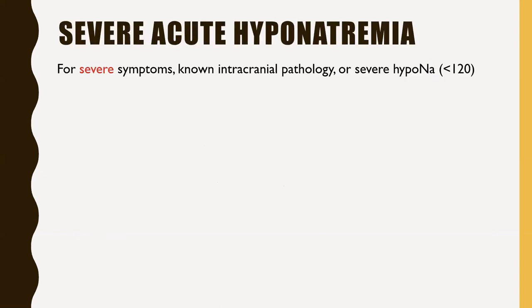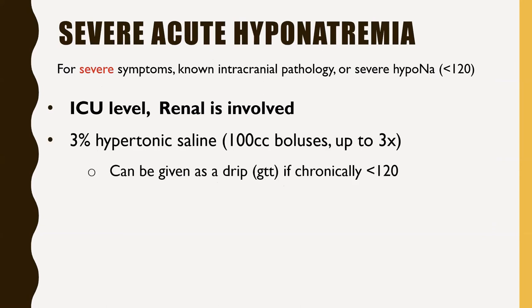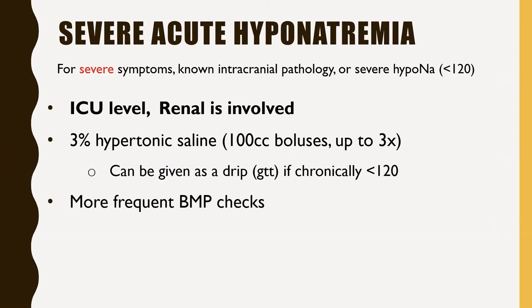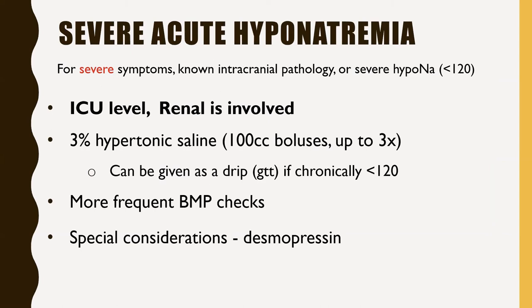For patients with severe hyponatremia (sodium less than 120) in the ICU: renal is usually involved. These patients get hypertonic saline — 100 cc boluses up to three times, or as a drip if chronically hyponatremic. You'll need more frequent BMP checks. Desmopressin may be used alongside hypertonic saline to prevent overcorrection, since correcting hyponatremia can sometimes lead to rapid overcorrection.